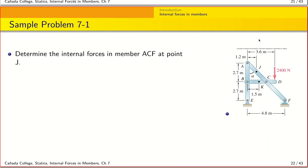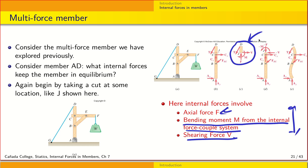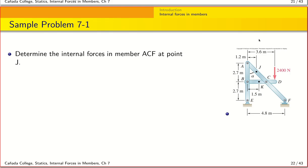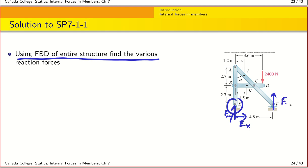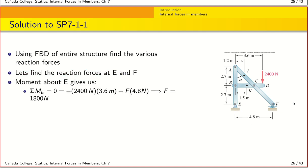Now let's apply this idea to an example problem. We want to find the internal force in member ECF at point J. Step one — as we have always done — is to use the free body diagram of the entire structure to find the reaction forces. At point E we have forces Ex and Ey, and at position F we have only Fy since it is a movable roller joint.